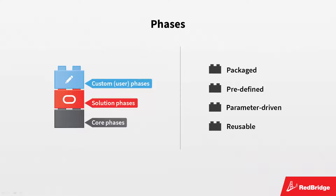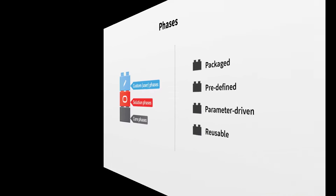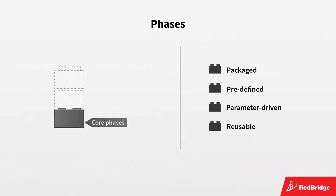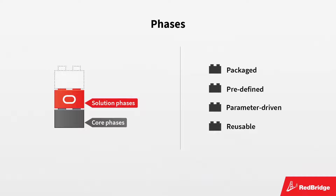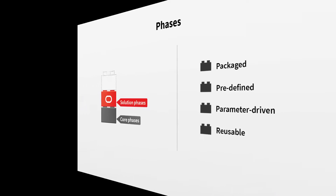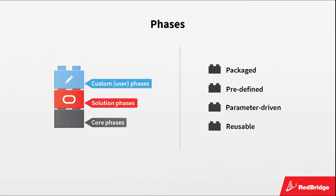To fully automate the lifecycle management process, you need the ICANN ALM phases. Those phases are predefined, parameter-driven, reusable package building blocks. There are three types: core phases, solution phases, and custom phases. Core phases perform the core ICANN ALM functionality and cannot be altered or deleted as they are an integral part of ICANN ALM. Solution phases are delivered by RedBridge or RedBridge partners and execute specific processes — like the automation of the build and deploy processes for ODI. If necessary, you can also create your own custom phases.